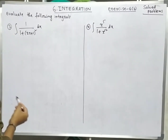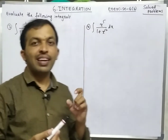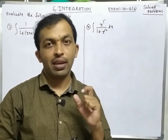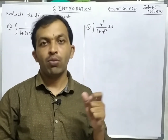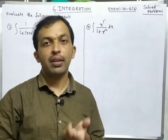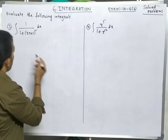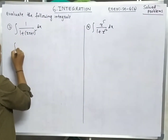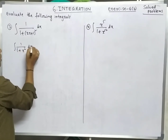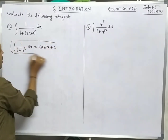Next problem — a simple one. This looks like integration of 1/(1+x²) dx, but at the place of x we have 2x+1. No problem — since it is linear, we can apply the formula directly. The formula is integration of 1/(1+x²) dx = tan⁻¹x + c.